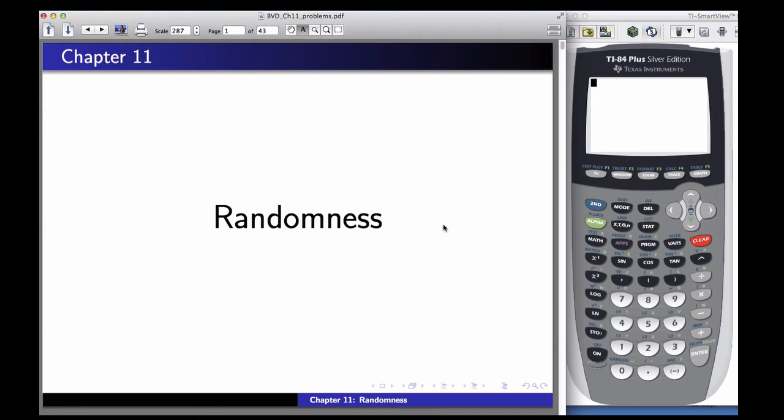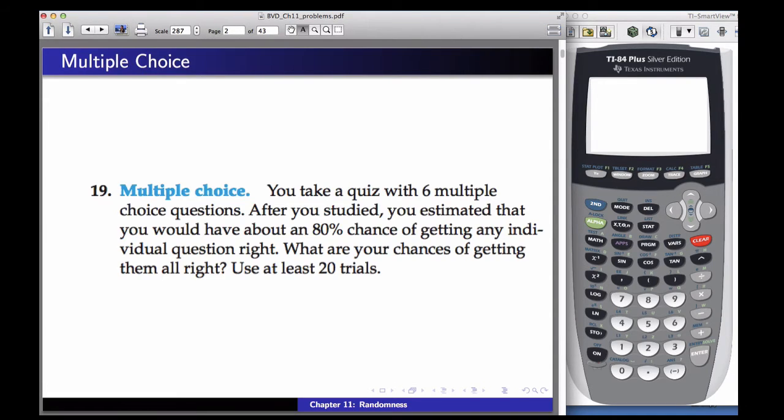Okay, now let's look at an example from Chapter 11. This is number 19. You take a quiz with six multiple-choice questions. After you studied, you estimated that you would have about an 80% chance of getting any individual question right. So what are your chances of getting them all right? Use at least 20 trials.